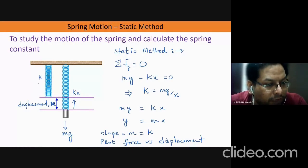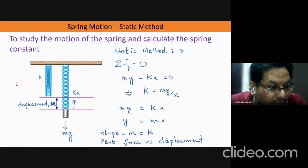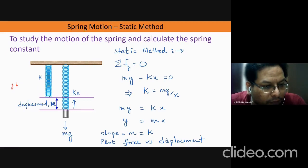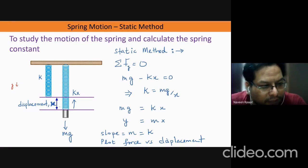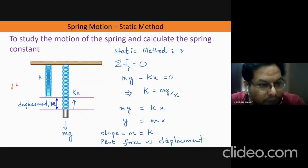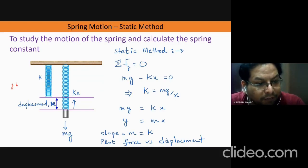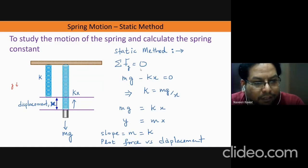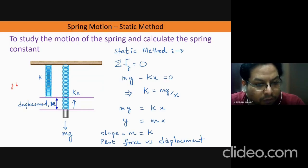When we attach a mass to the spring, gravity acts downward and because of the weight mg the spring gets stretched to a certain displacement x from its standard position. After a certain point the restoring force kx will balance the force of gravity, and the object will not move anymore. In that scenario the summation of net forces in the y-direction will be zero because the object is not accelerating — that is why we call it the static method.